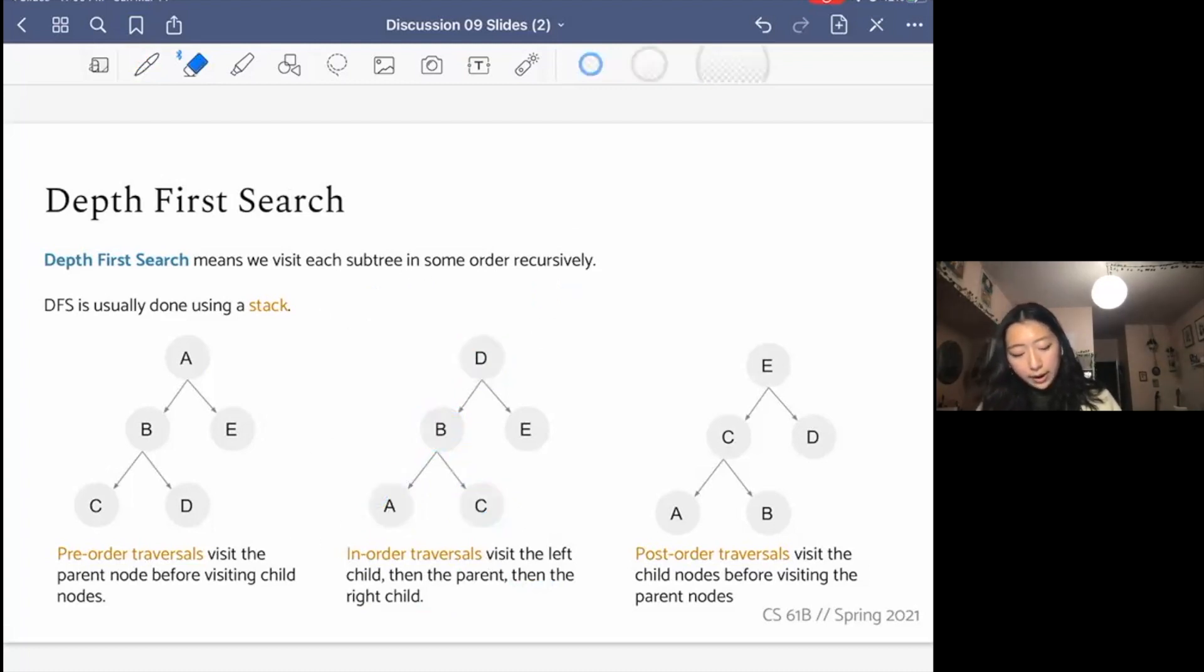You're going to note in-order traversals are actually a little more specific than pre-order or post-order, because this only makes sense when you have a sort of symmetrical left child and right child, or in other words, when you're working with a binary tree, where you only have two children. I guess there are ways to define it when you have more than two children. But that's just one thing to note.